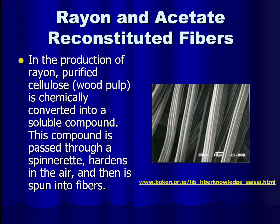Rayon and acetate are our two main reconstituted fibers. In the production of rayon, purified cellulose or wood pulp is chemically converted into a soluble compound, often dissolved in something like acetone. This compound is then passed through a spinneret, which hardens the fibers in the air so they can be spun together. You can see a pattern of ridges on the outside surface of the reconstituted fibers because that pattern was in the spinneret — and we will also see this in synthetic fibers.